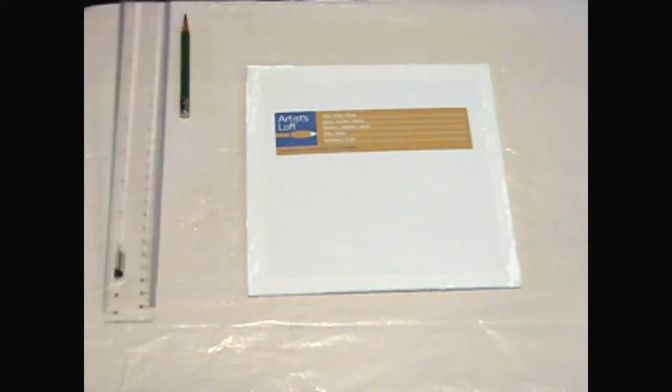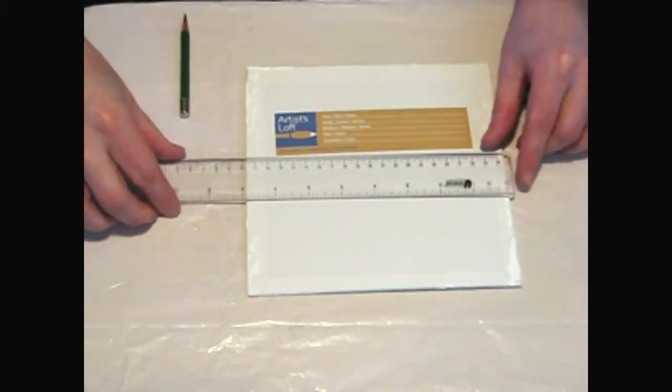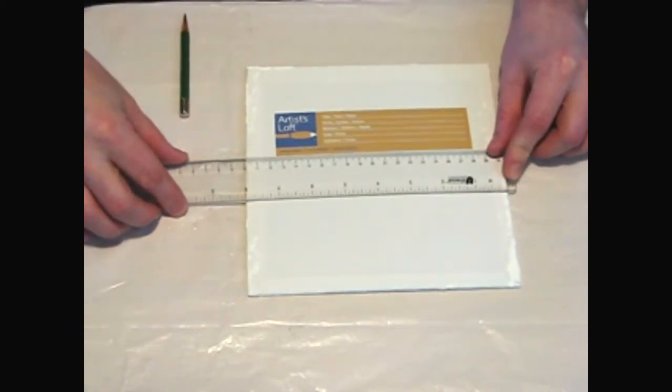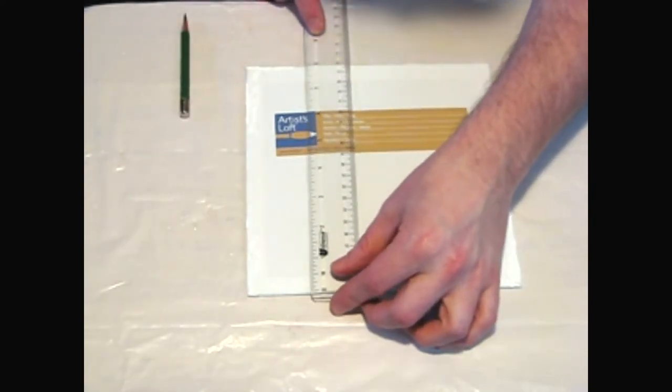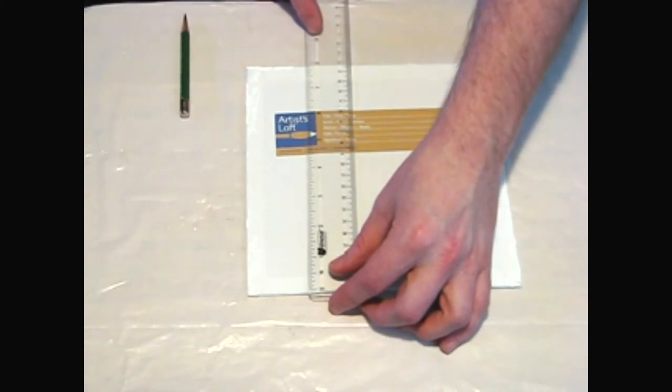My goal is to make the canvas look like it's floating off the wall. To give that effect, I need to attach a standoff frame to the back of the painting. First, I measure the canvas board dimensions. This one is 8 inches by 8 inches square.